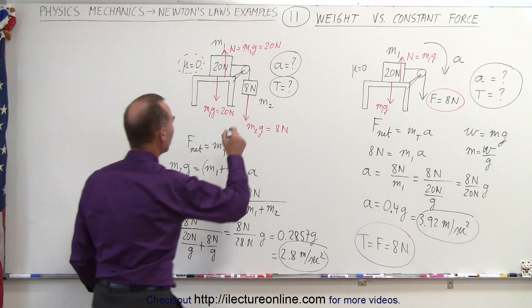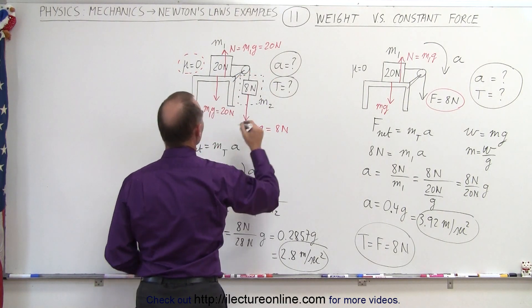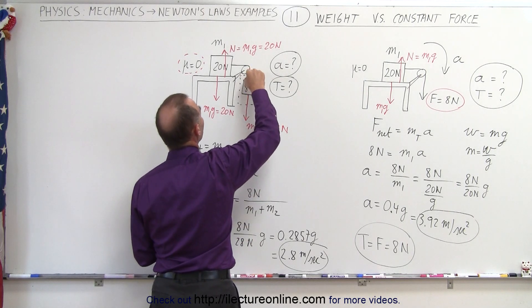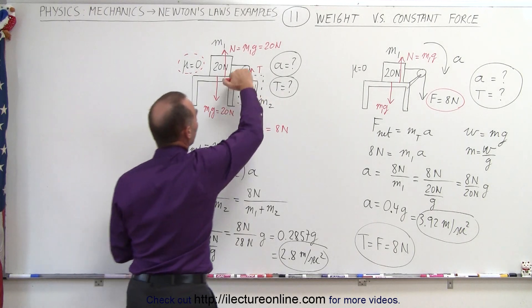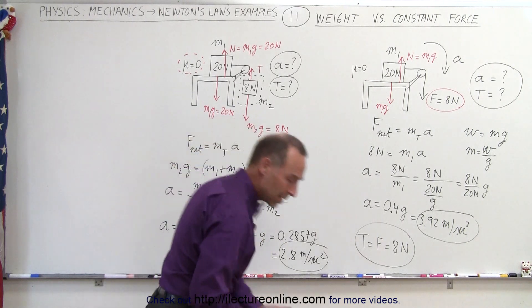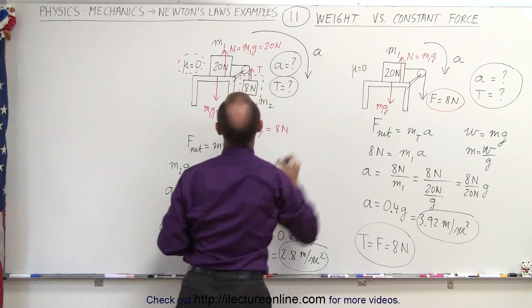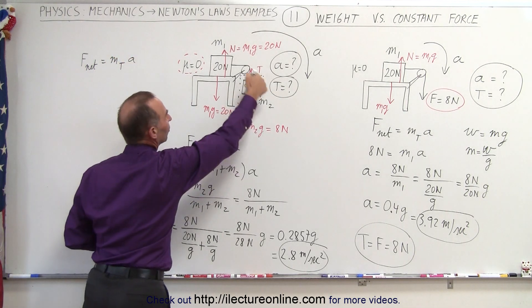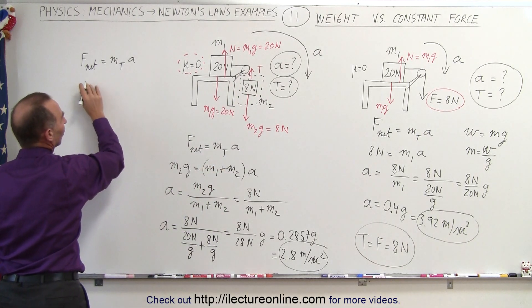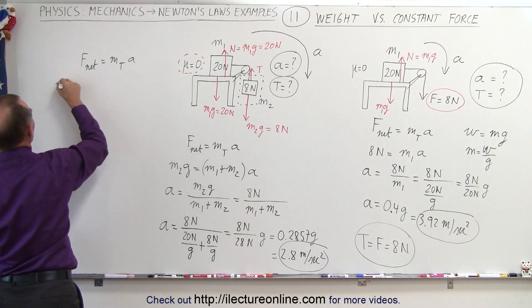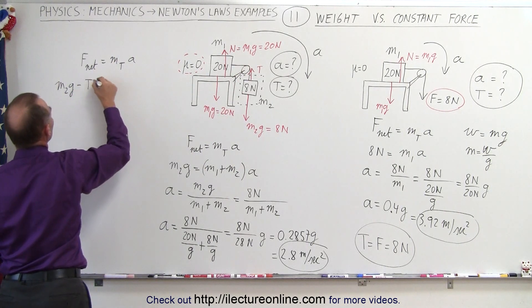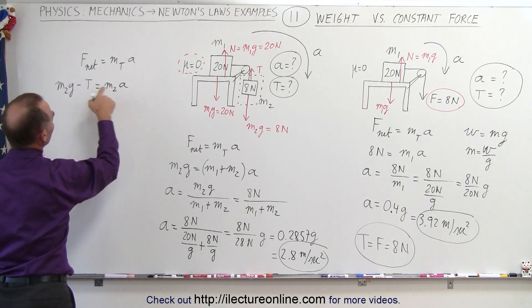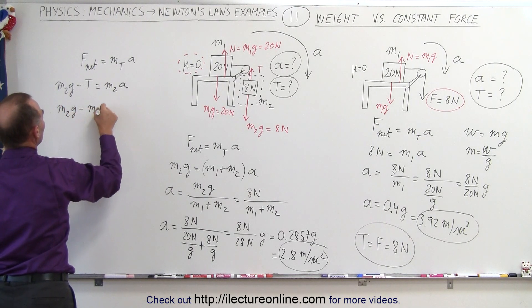What about the tension in this case? Taking the hanging mass M2 alone and drawing a free body diagram, we have a tension force acting upward and M2g acting downward. The acceleration of the system is in the downward direction. Applying F_net equals mass times acceleration for this single mass: the net force in the direction of acceleration is M2g minus the tension opposing acceleration, equal to M2 times acceleration.